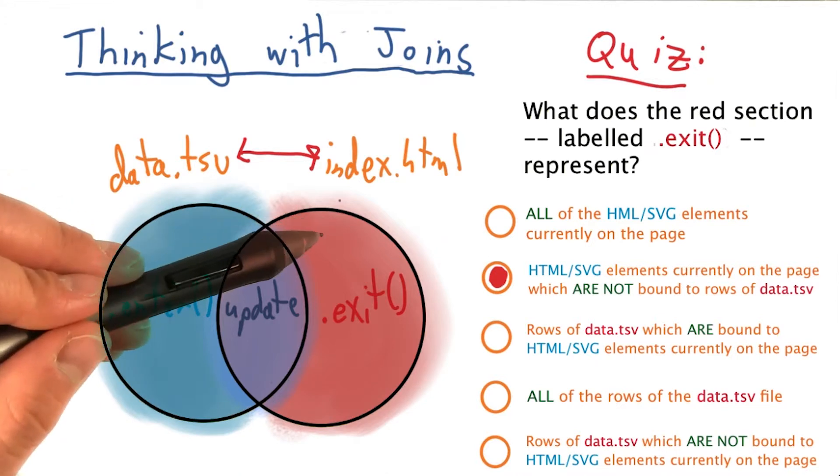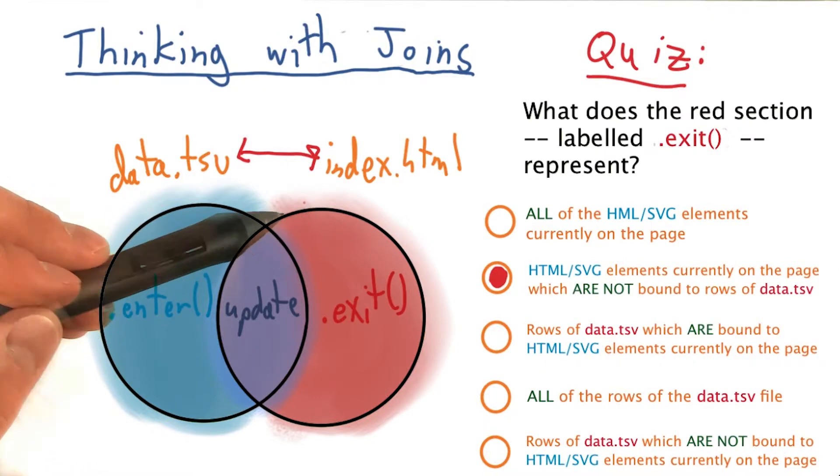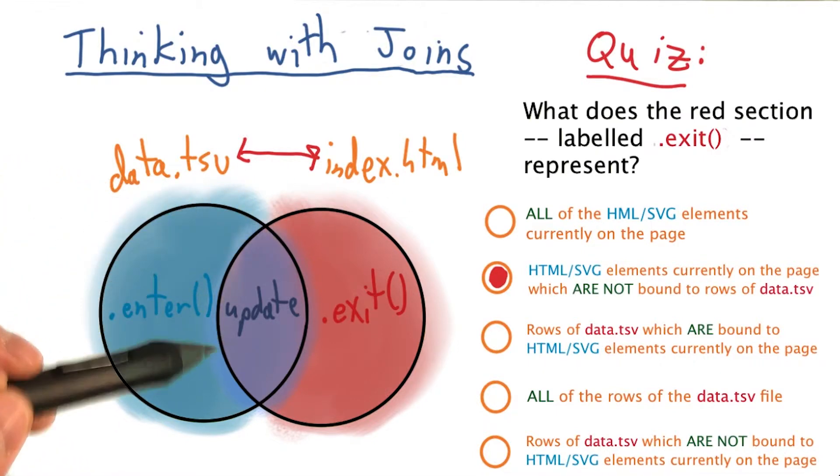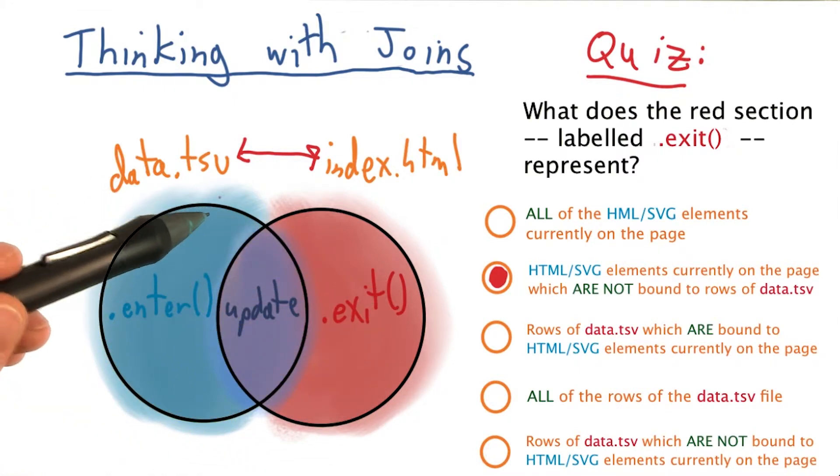The right circle here corresponds to every HTML or SVG element on our page that might have previously been bound to data. But in a new call to .data, these elements no longer correspond to a row in our data file.